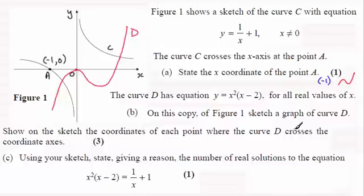So this would be the curve D, and we're asked to show on the sketch the coordinates of each point where the curve D crosses the coordinate axis. Well it certainly crosses at the origin here, and this point here will be when y equals 0 and it will be at x equals 2, so that point there will have coordinates (2, 0).